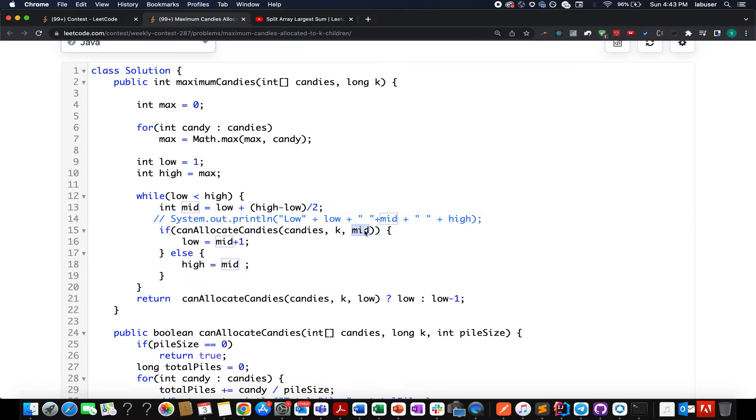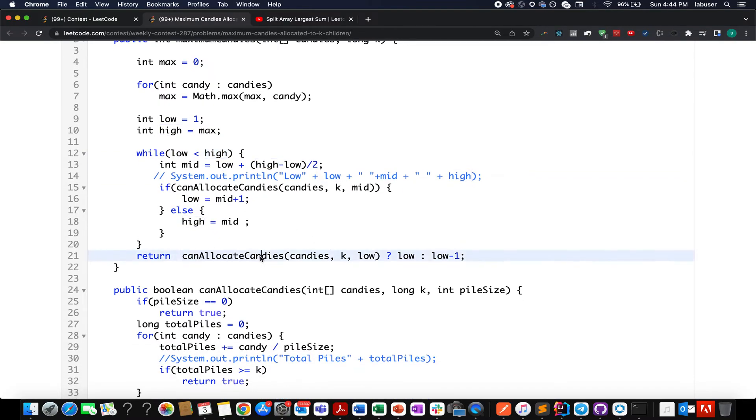This represents the pile size. In case we're able to sustain it, we update low to mid plus 1. Otherwise, we update high to mid. As soon as we're out of this loop, meaning low equals high, we check whether using this low value we're able to sustain the distribution. If yes, we simply return low. Otherwise, we return low minus 1.